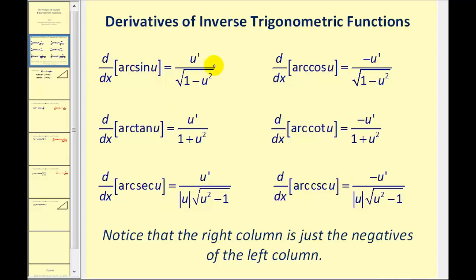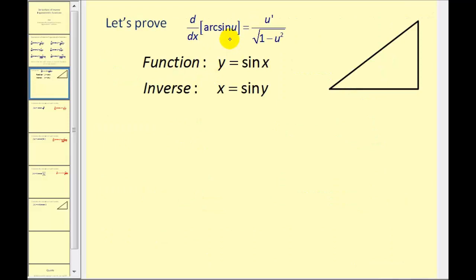Let's see if we can derive at least one of these before we do some examples. Remember that the arc sine function is the inverse of the sine function. If we start with y equals sine x and want to find the inverse function, the procedure is to interchange the x and the y variables and then solve for y. So here we have the inverse sine function where y is the angle and x is the sine function value.